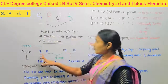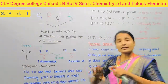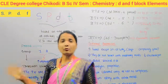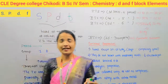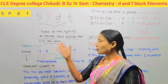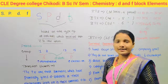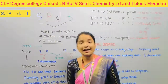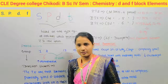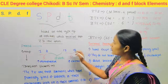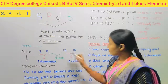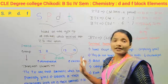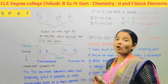Group 1 and group 2 elements are totally S-block elements. Group 1 elements we call alkali metals, and group 2 elements are alkaline earth metals. Group 13 to group 18 elements are P-block elements.